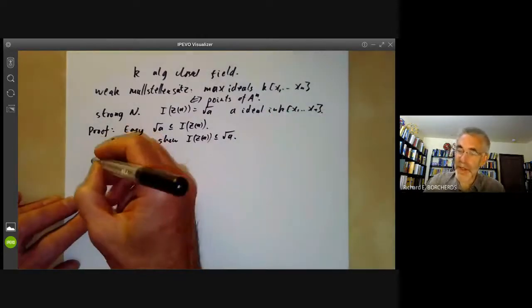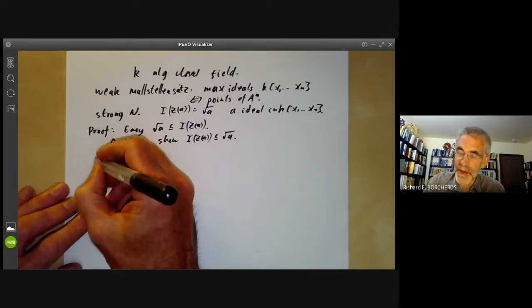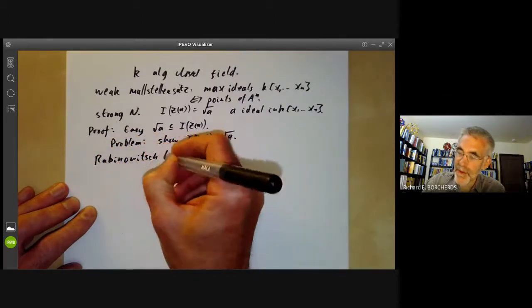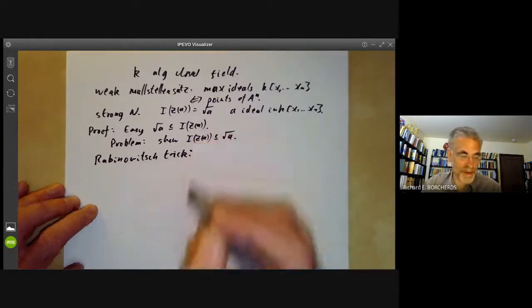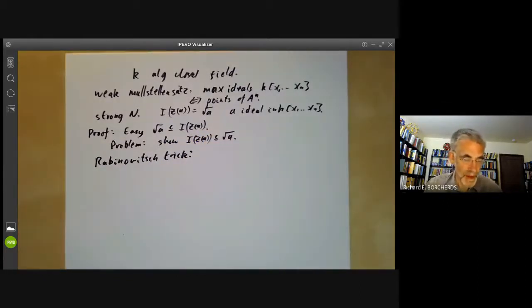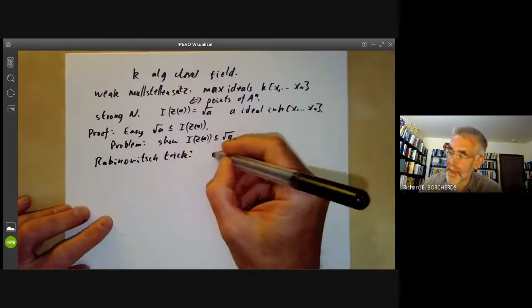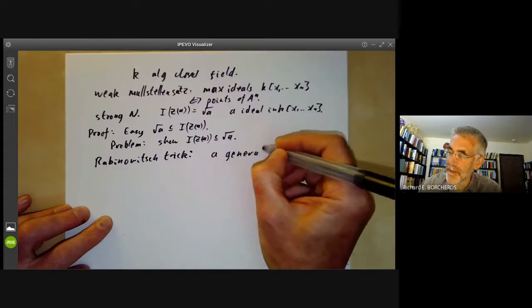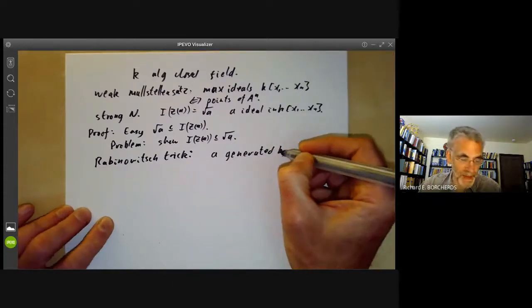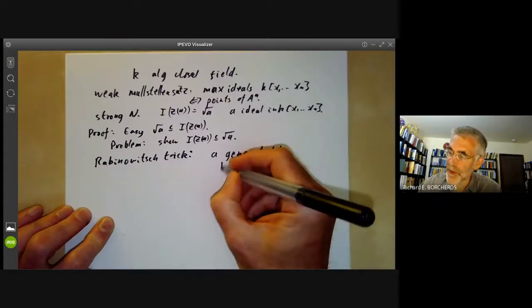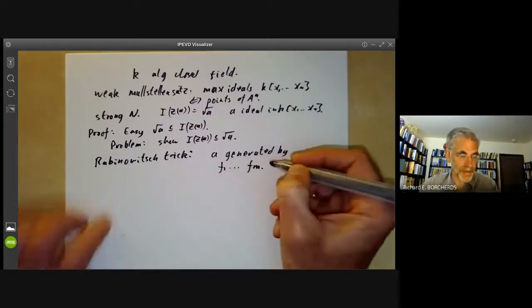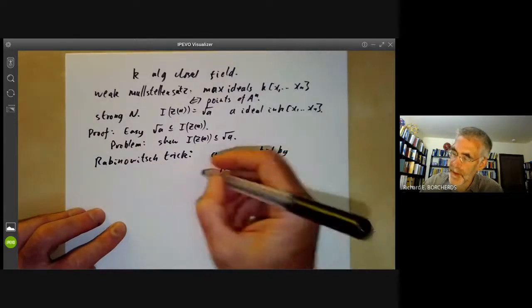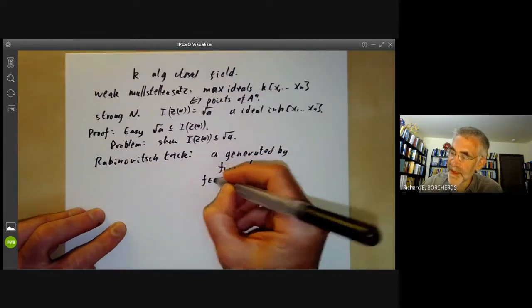And we're going to use a very cunning idea due to Rabinovitch called the Rabinovitch trick as follows. What we do is we suppose the ideal a is generated by elements f1 up to fm. And we suppose that f is an element of I(Z(a)).